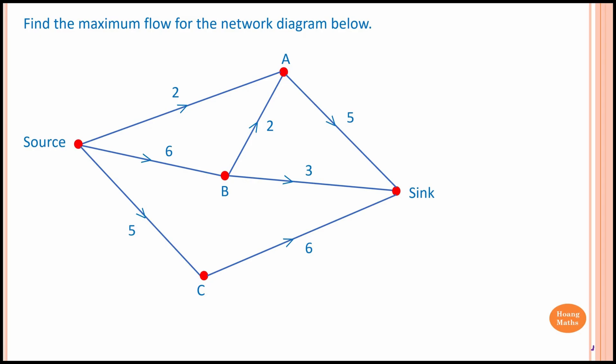Please stop the video and try this one yourself. We have 5 plus 6 plus 2 equals 13 units flowing out of the source. We need to find out what is the maximum number of units that can flow into the sink.